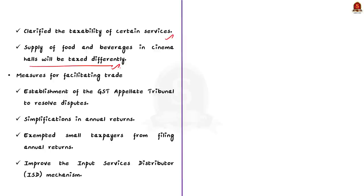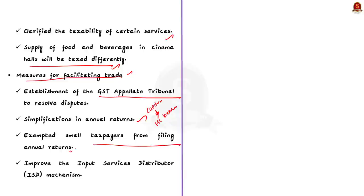Supply of food and beverages in cinema halls will be taxed differently, depending on whether it is provided independently or as part of a bundle with cinema tickets. The 50th GST Council recommended the establishment of a GST Appellate Tribunal to resolve disputes, which is a long-pending reform now addressed. The first set of tribunals is expected to become operational within four to six months, starting with state capitals and cities with High Court benches. The council also proposed simplification in the annual return process and exempted small taxpayers from filing annual returns, reducing their compliance burden.